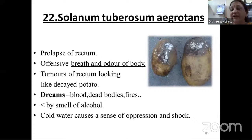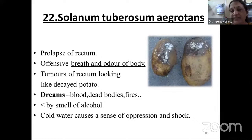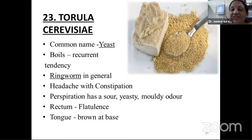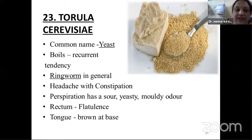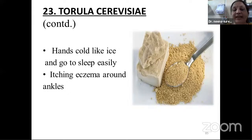Twenty-third drug: Torula cerevisiae (yeast plant) — recurrent boils; indicated for tinea (ringworm affections); headache with constipation; perspiration with sour, yeasty, mouldy odor; lot of flatulence; tongue has brown coating at the base; hands cold like ice; numbness; itching and eczema around the angle — another PQRS symptom.